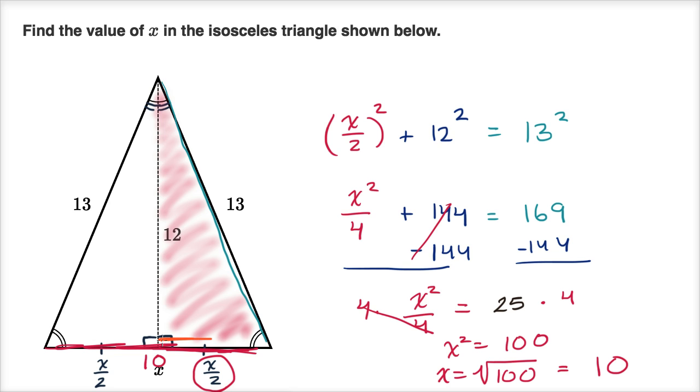So this length right over here, that's going to be five. And indeed, five squared plus 12 squared, that's 25 plus 144, is 169, which is 13 squared.